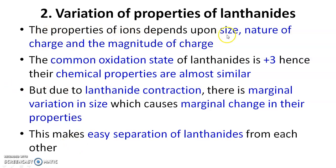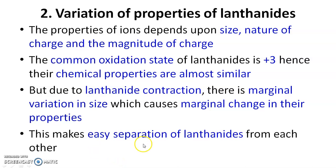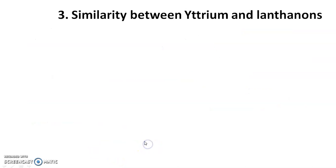The nature of charge and magnitude of charge are the same for all lanthanide ions, but the size of the lanthanide ion marginally decreases from La³⁺ to Lu³⁺. Because of this lanthanide contraction, there is a marginal change in properties, which helps in the separation of lanthanides from each other.